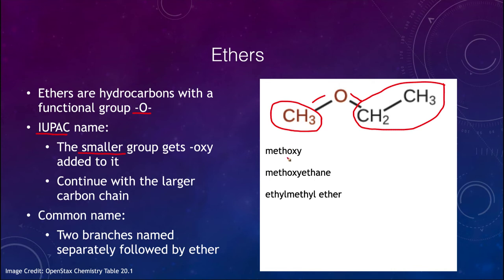So you take the smaller of these groups, which in this case would be the methyl group, and it becomes an oxy added to it. So the methyl comes, AL comes off, and it becomes methoxy. So this part, the methyl group, adds the oxy. And then we continue with the larger group in the chain, which is an ethane. So this would be ethane. So you have meth for the CH3, oxy, and then ethane. And that becomes the naming would be methoxyethane.